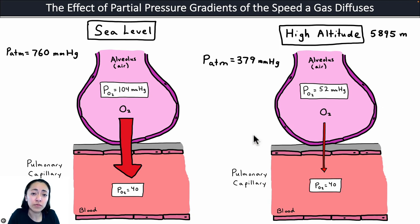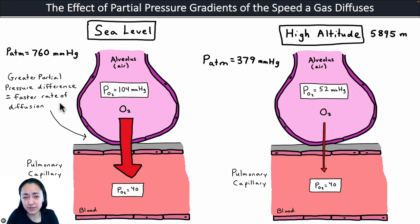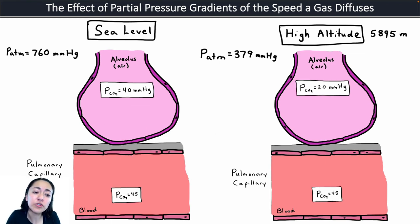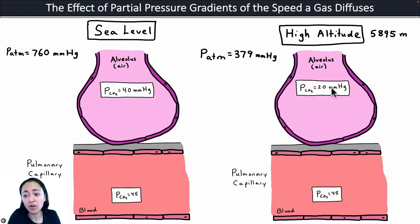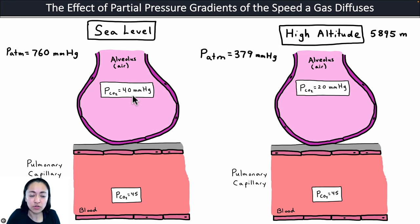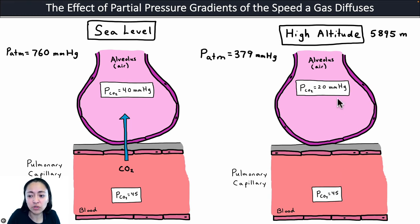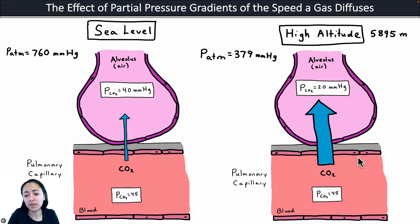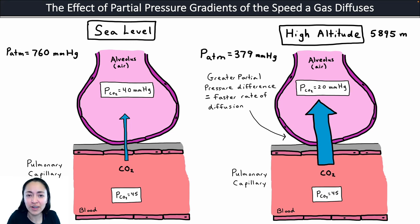At higher altitudes, the greater partial pressure difference at sea level means a faster rate of diffusion. Let's compare the rate of diffusion of carbon dioxide at sea level versus high altitude. Because the atmospheric pressure is halved at the top of Mount Kilimanjaro, the partial pressure of carbon dioxide in the alveoli is also halved — about 40 millimeters of mercury at sea level and about 20 millimeters of mercury at high altitude. Carbon dioxide diffuses out of the blood into the lungs. At sea level, it goes from 45 in the blood to 40 in the alveoli. At high altitude, it goes from 45 in the pulmonary capillaries to 20 — so it actually diffuses even faster out of the blood at high altitude.